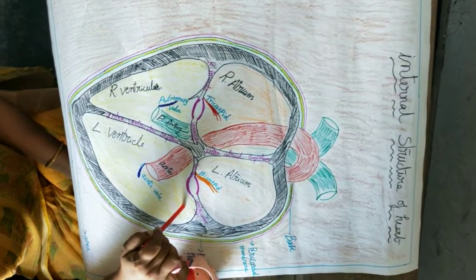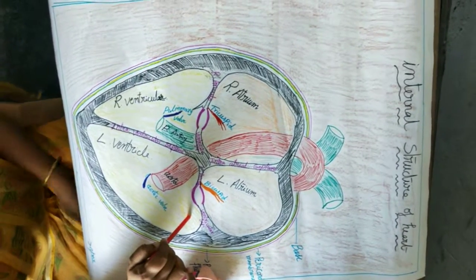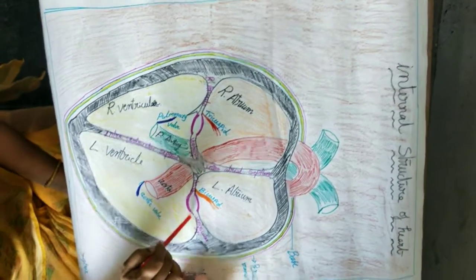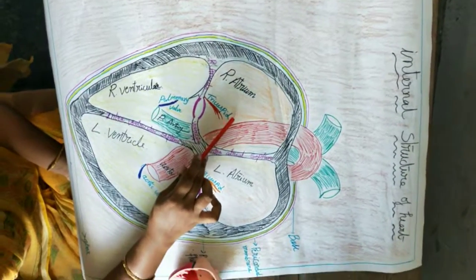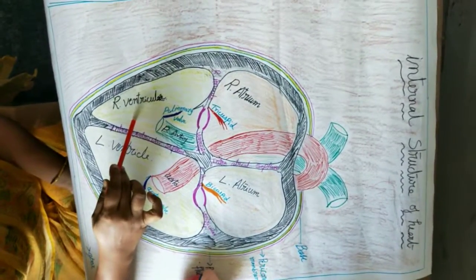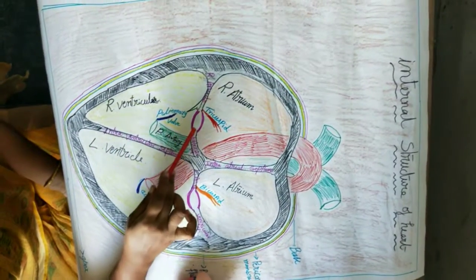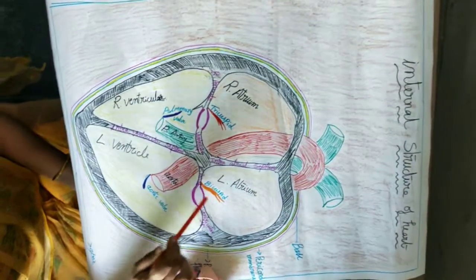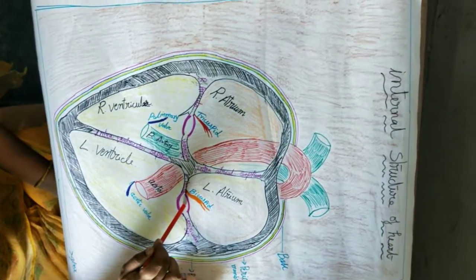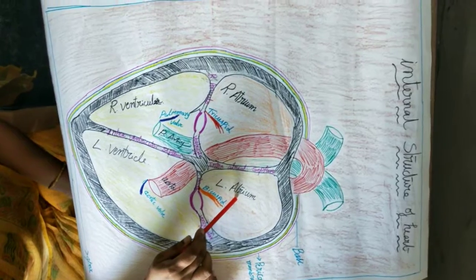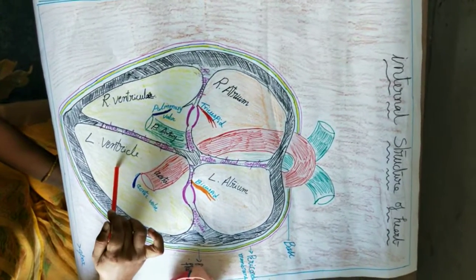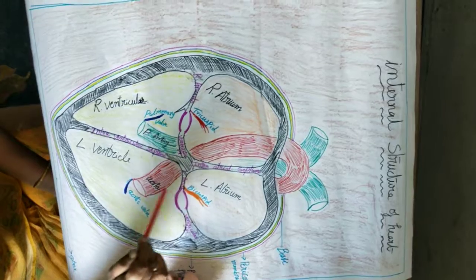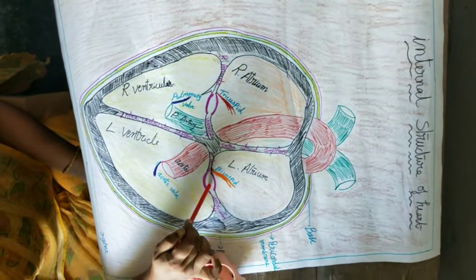Next, let us go to the openings of the heart. There are two openings. The opening between the right atrium and right ventricle is called the right atrioventricular aperture. The opening between the left atrium and left ventricle is called the left atrioventricular aperture.